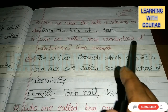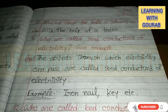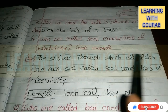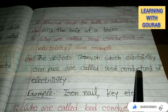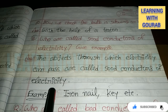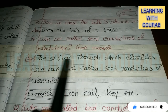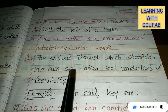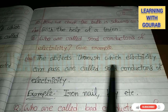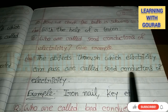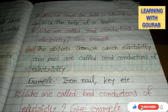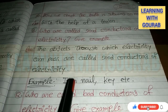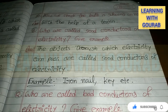Next: Who are called good conductors of electricity? Give an example. Answer: The objects through which electricity can pass are called good conductors of electricity. Examples: iron, nail, etc.